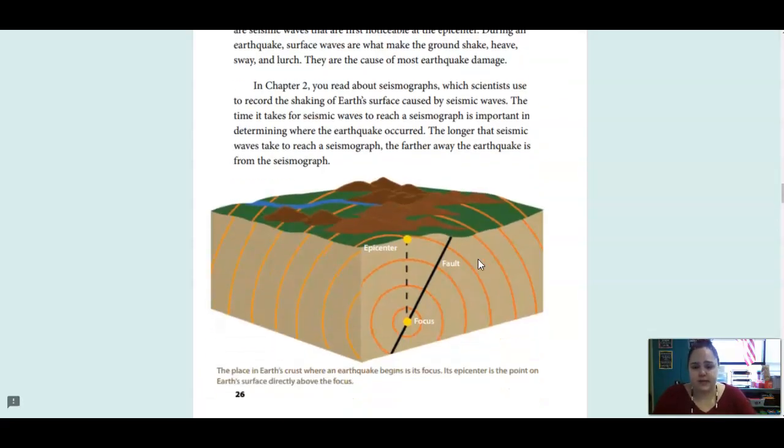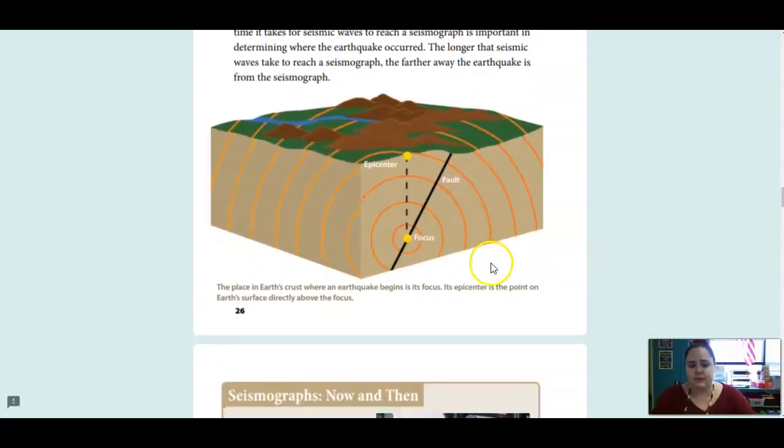In chapter 2, we read about seismographs, which scientists use to record the shaking of Earth's surface caused by seismic waves. The time it takes for seismic waves to reach a seismograph is important in determining where the earthquake occurred. The longer the seismic waves take to reach the seismograph, the further away the earthquake is. So, this is a great image showing us the place in the Earth's crust where an earthquake begins is its focus. So, this is where it began. The epicenter is directly above it on the crust. So, this is where the hardest hit is going to be.